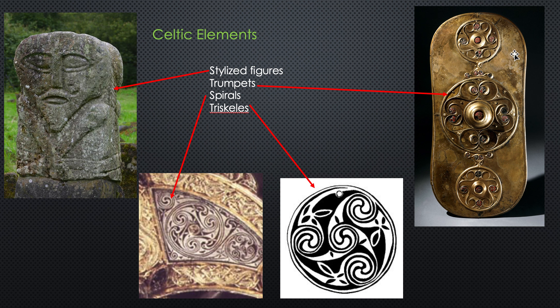This shield on the right is a beautiful example that was not actually a functional shield but was created as an offering to Celtic deities. They worshipped many nature deities — similar to Japanese Shinto belief — thinking that waters, rivers, and springs all had deities in them. They would throw offerings, sometimes including human sacrifice, to the deities at the source of these waters. This shield had been thrown into the Thames River in London, England.